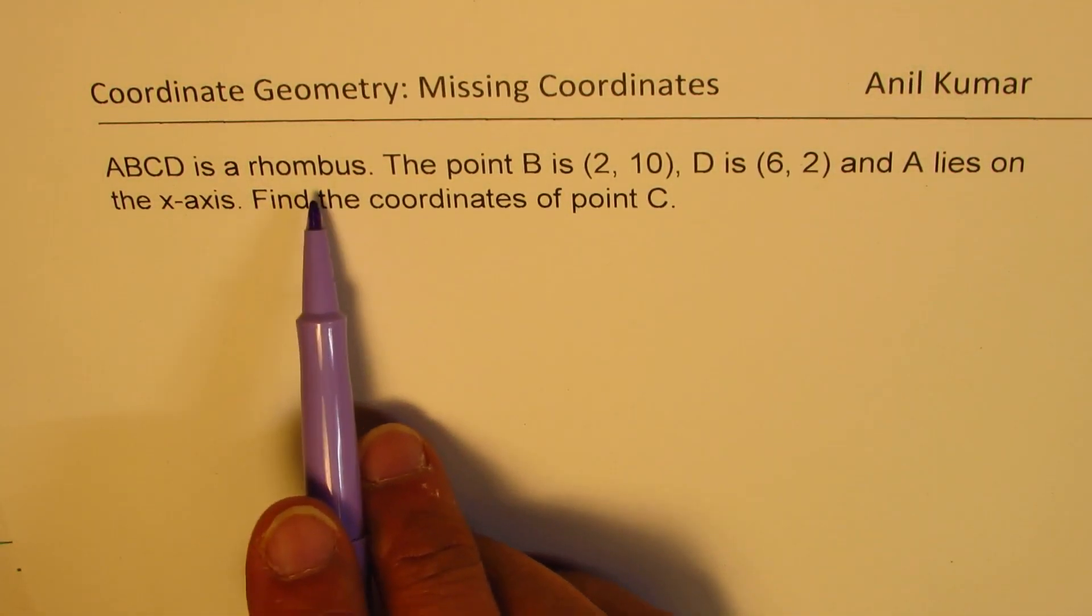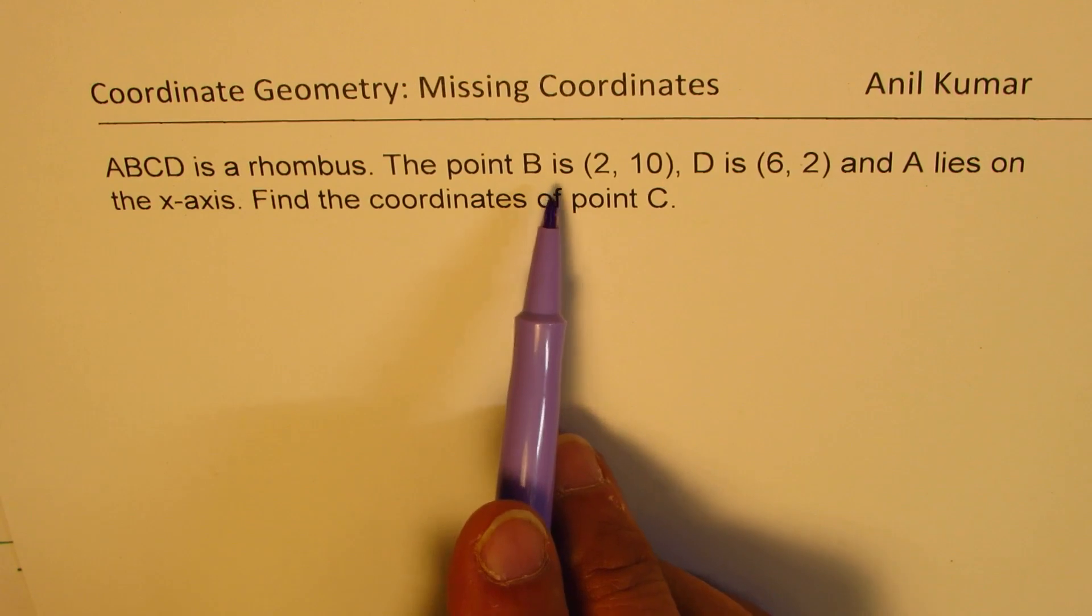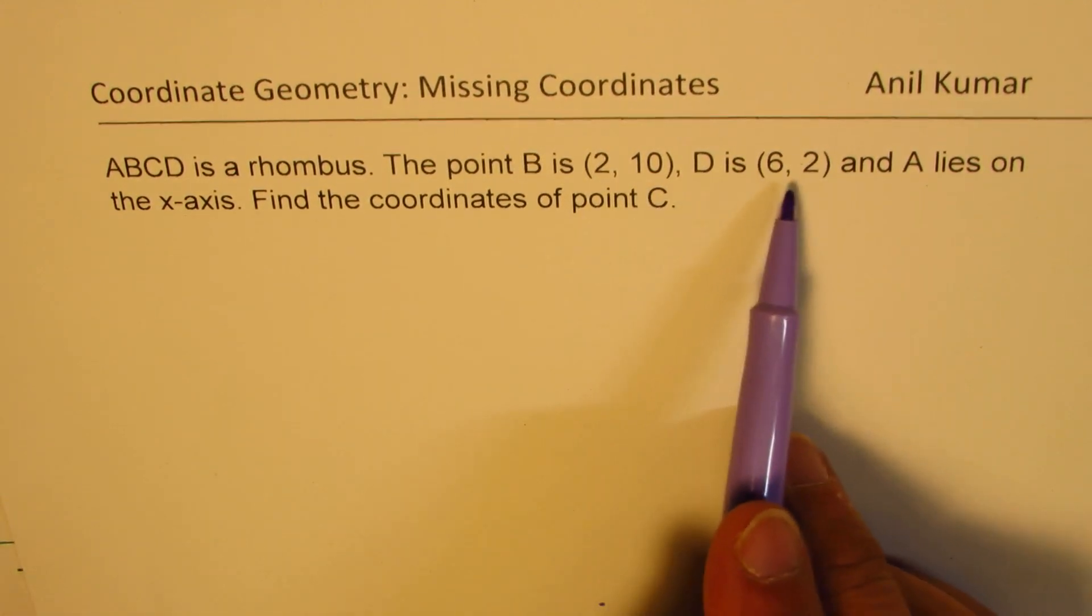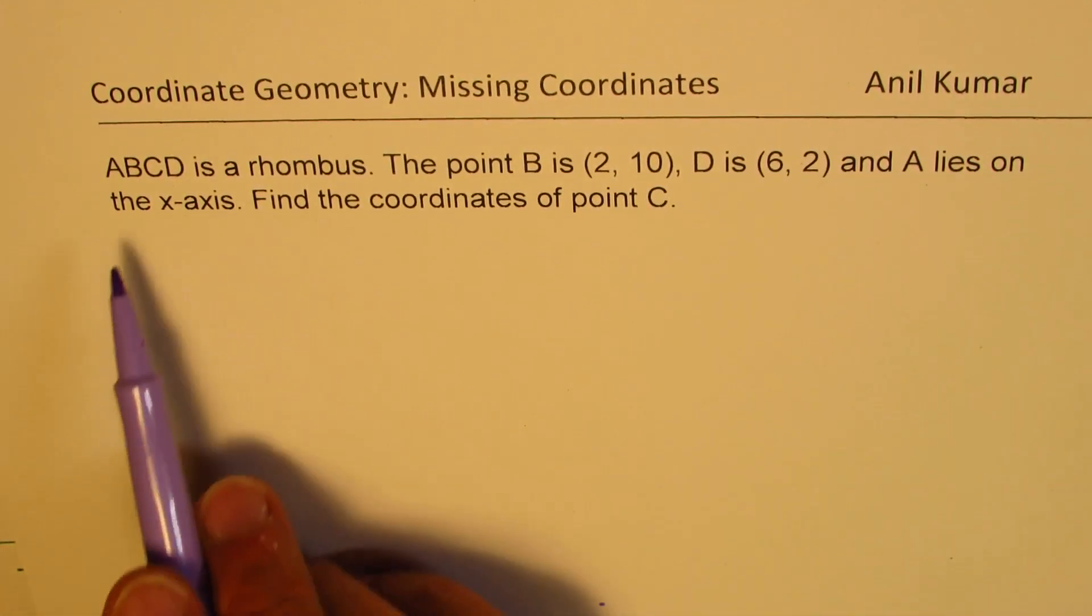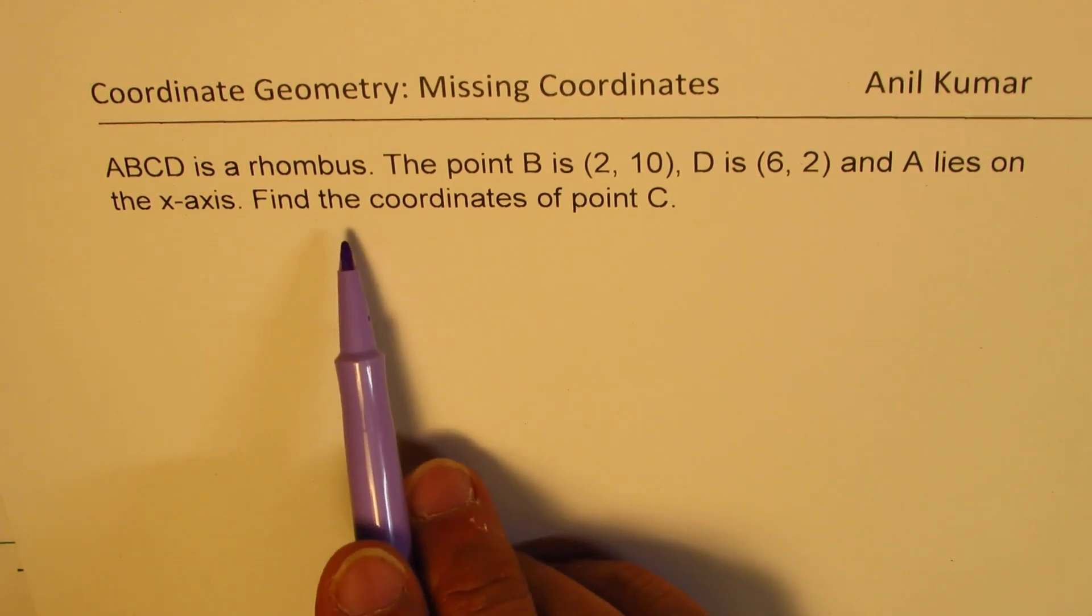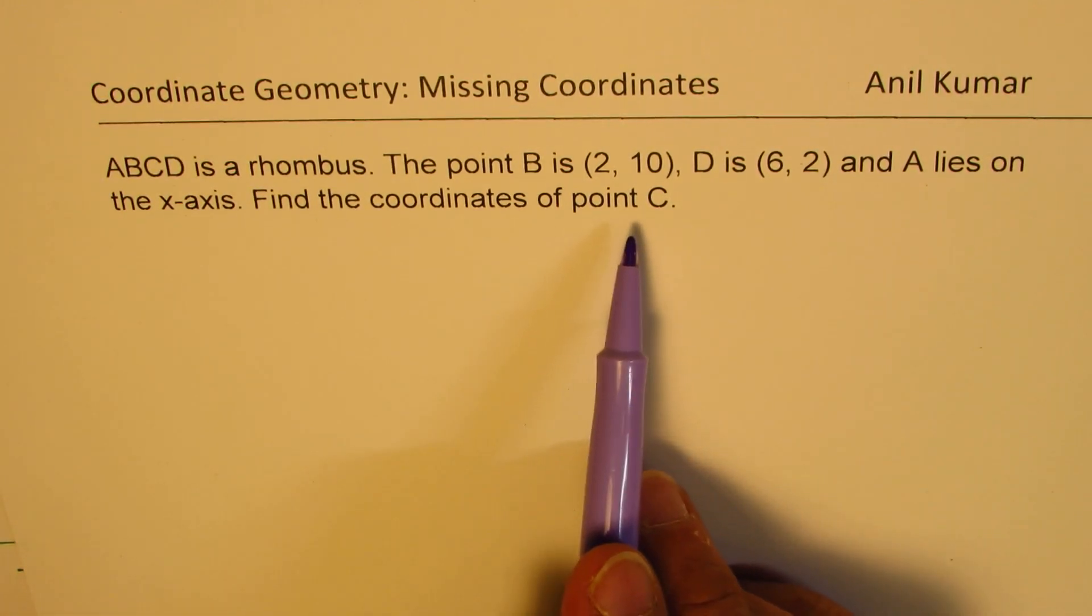ABCD is a rhombus. Point B is (2,10), D is (6,2), A lies on the x-axis. Find the coordinates of point C.